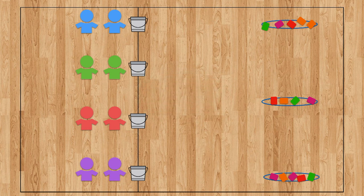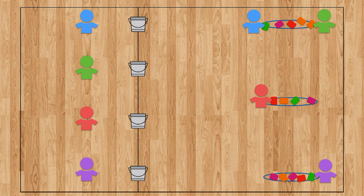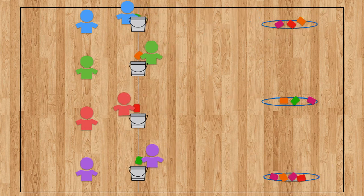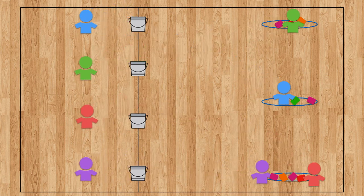When the round starts, the first player from each team is going to run down, grab one piece of treasure, once they've grabbed one they're going to run it back and place the treasure in their bucket. The next person can't go until they get a high five. This process is just like a relay race.